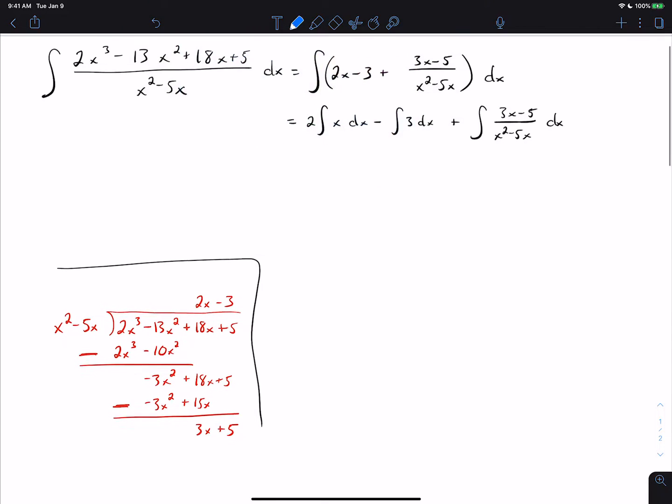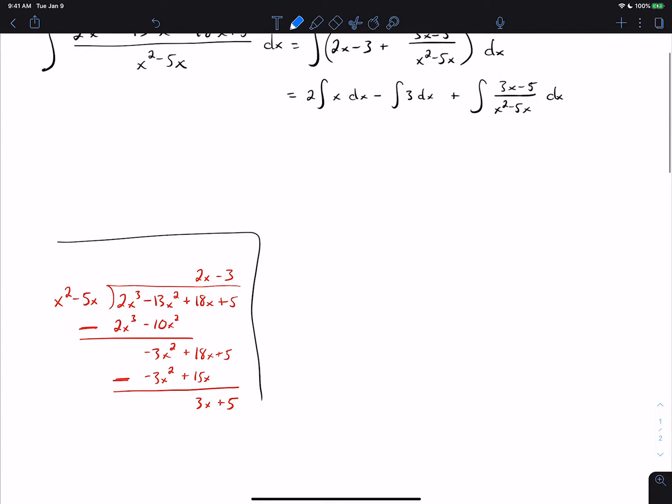So we do the partial fractions decomposition by factoring the denominator. So we take 3x minus 5 over x times x minus 5. We can split that into a over x plus b over x minus 5 and now multiply by the common denominator. So we get 3x minus 5 equals a times x minus 5 plus bx. The a distributes and now we combine like terms.